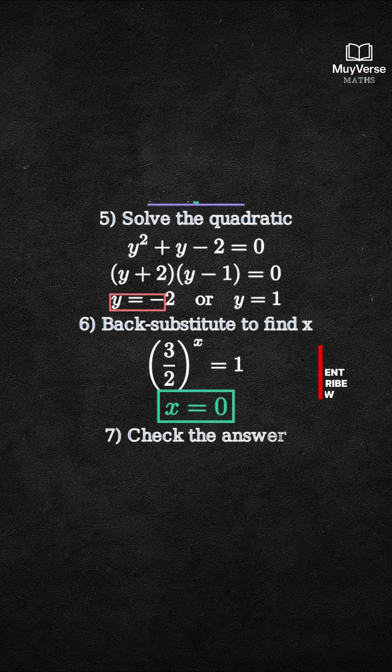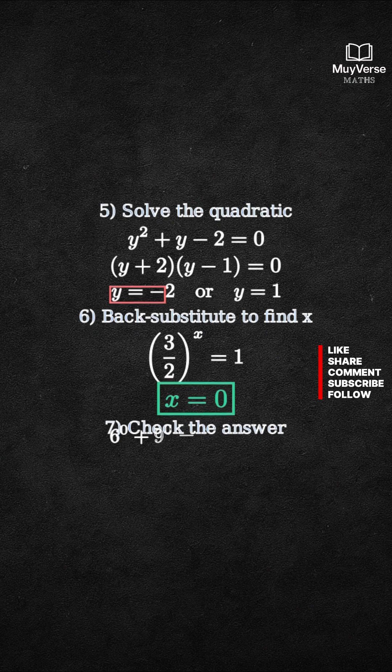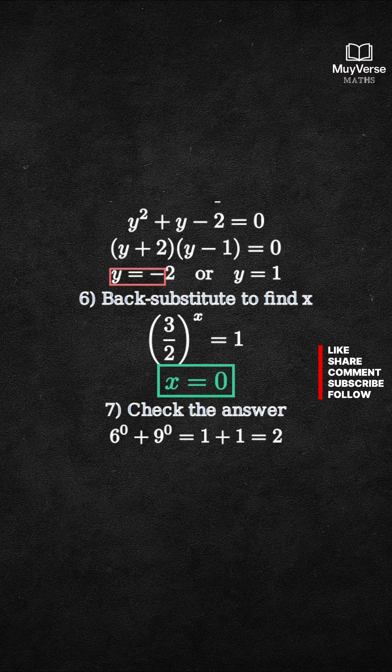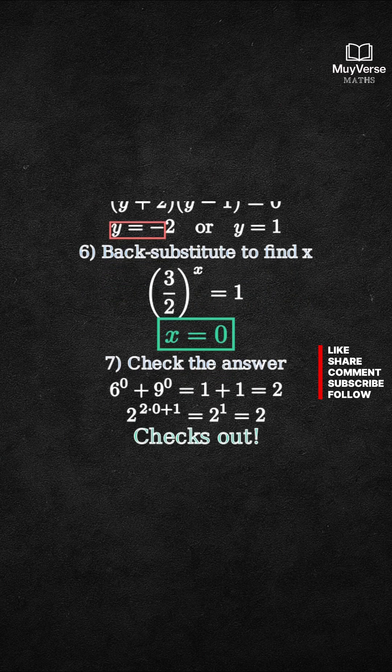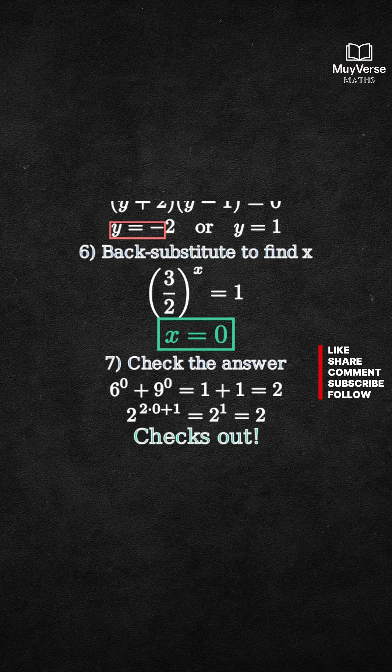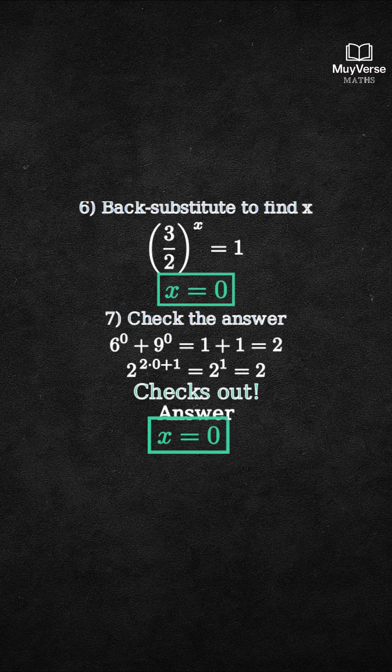Step 7. Quick check in the original equation. 6 to the 0 plus 9 to the 0 equals 1 plus 1 equals 2. 2 to the power 2 times 0 plus 1 equals 2 to the 1 equals 2. Both sides match. So our answer is confirmed. Final answer x equals 0.